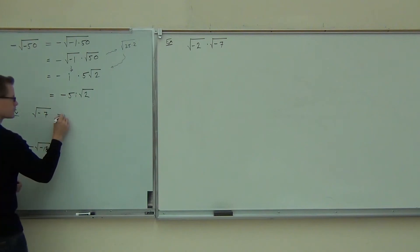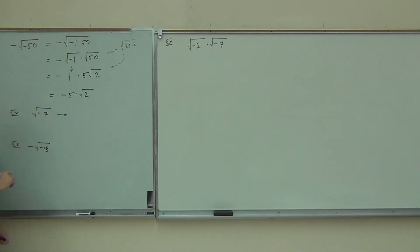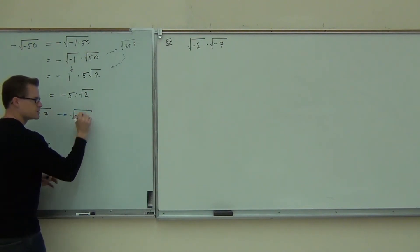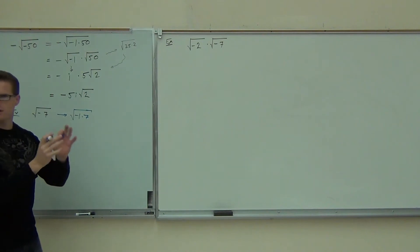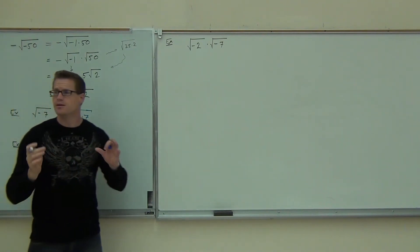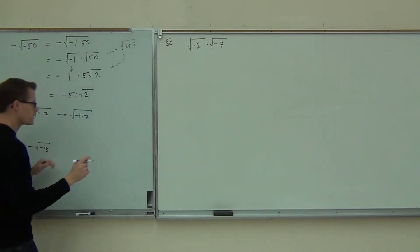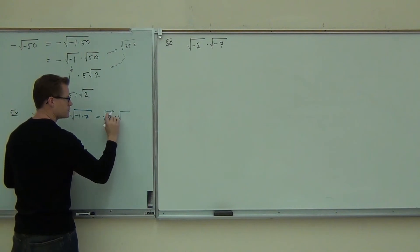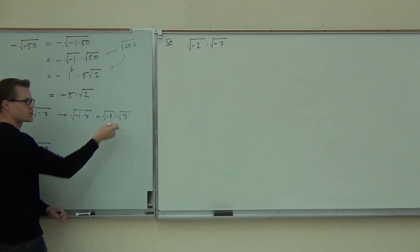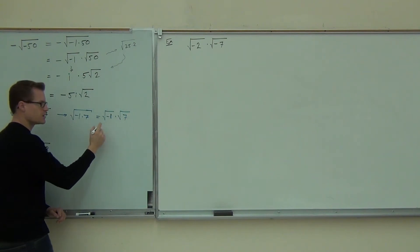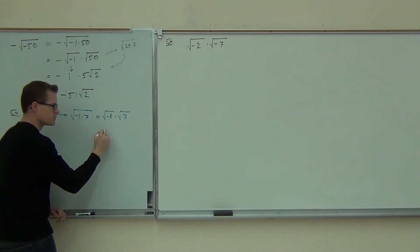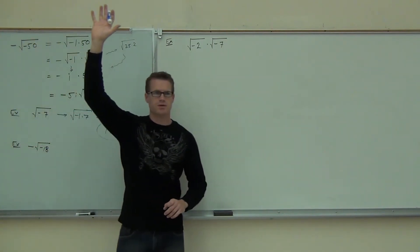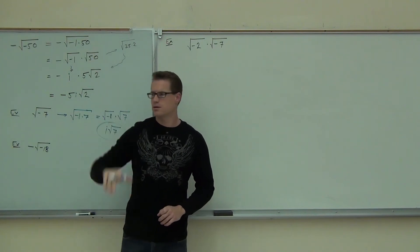Okay, so square root of negative 7 — I'm hoping you split up negative 1 times 7. We're just splitting off negative 1. That's the only thing we can do because we've defined the square root of negative 1 as i — that's the only definition. So we'll have the square root of negative 1 times the square root of 7. Square root of 7 I can't simplify at all. The square root of negative 1 equals i. Your answer is i root 7.